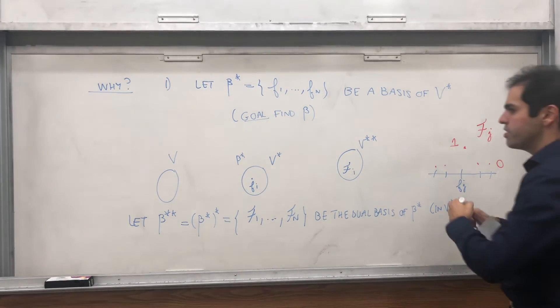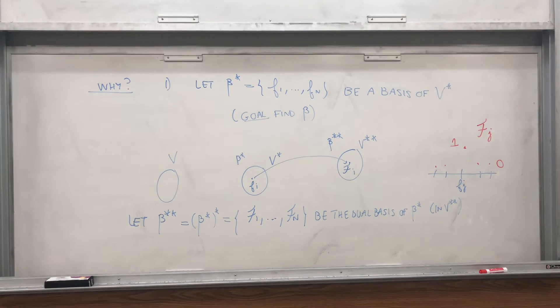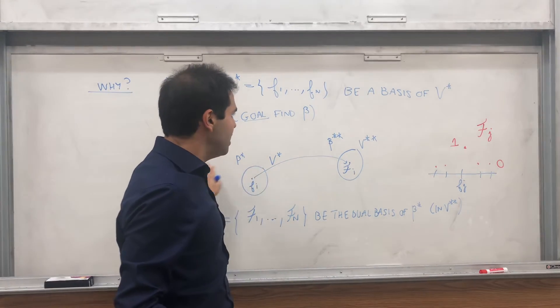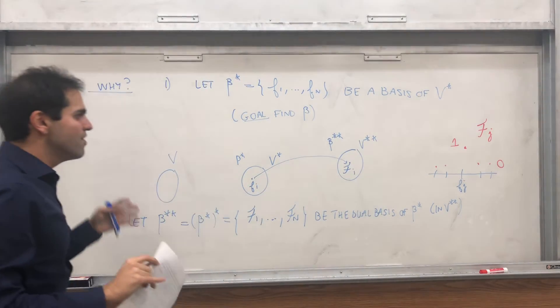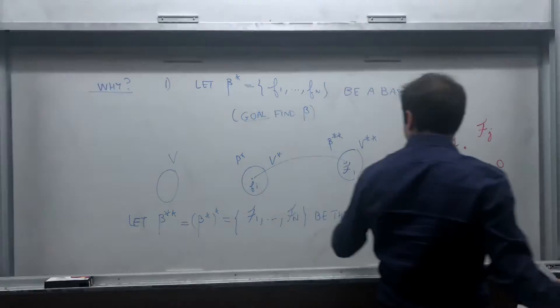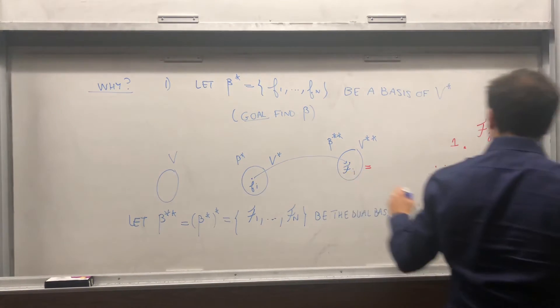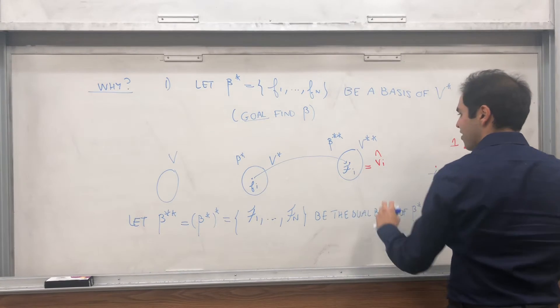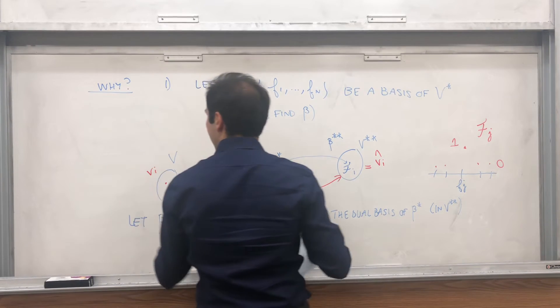So that's good. In other words, it's easy to go from beta star to beta double star. The question is, well, we have V double star. How can we get V from that? Luckily, there was a previous video I've done that shows that V and V double star are isomorphic and even more than isomorphic. There's a very elegant isomorphism called hat that goes from V to V double star. In other words, it turns out all the script fi's are of the form v i hat, for some v i.